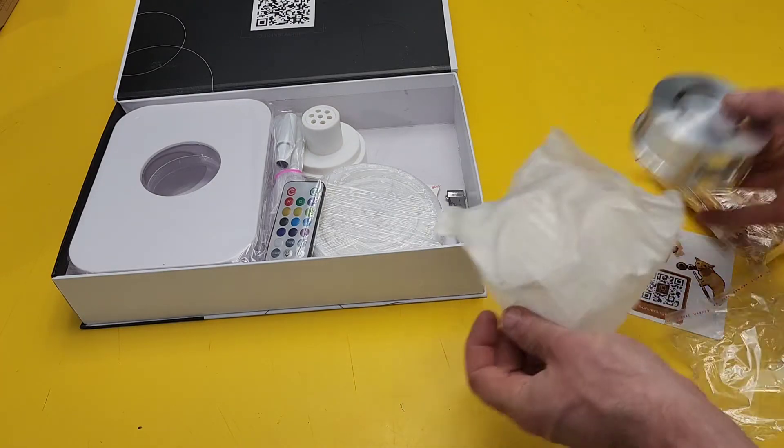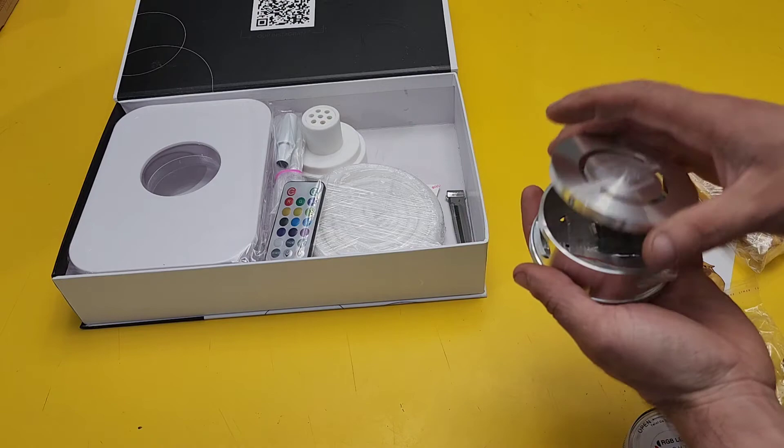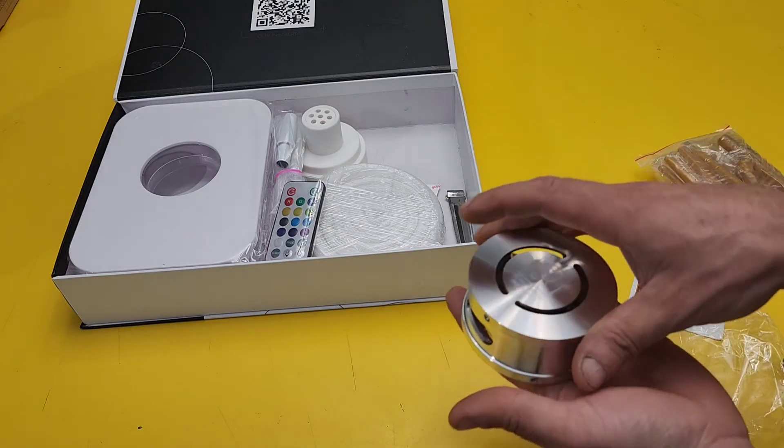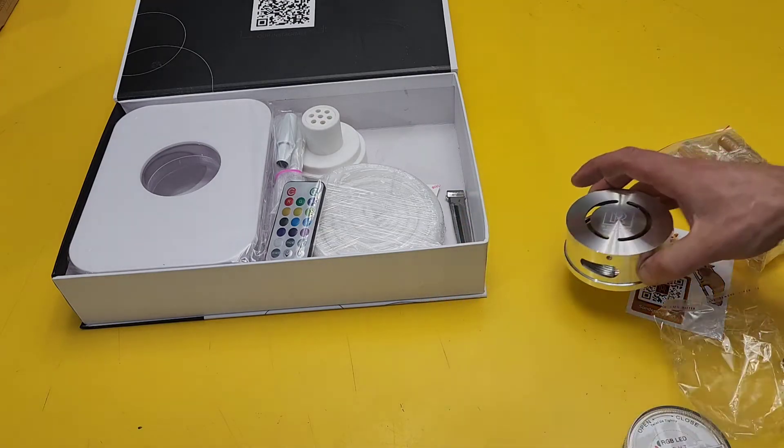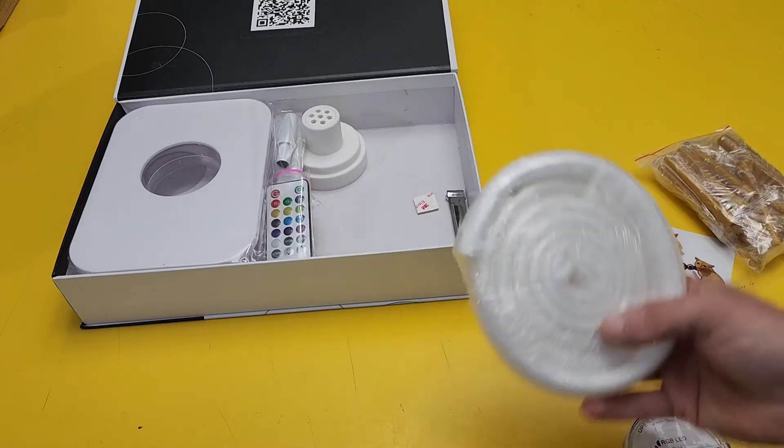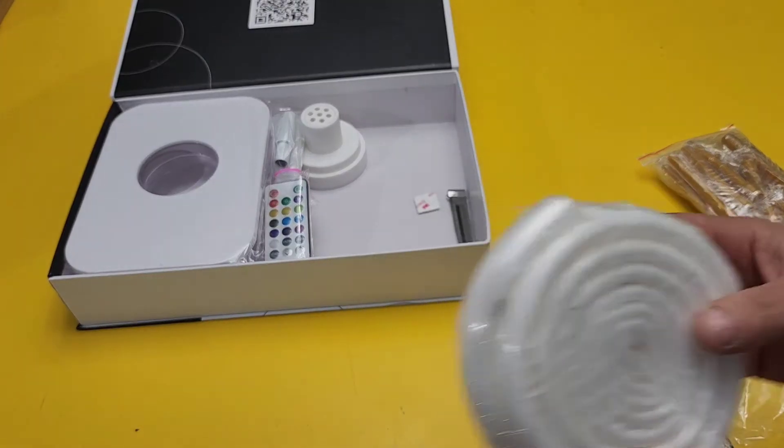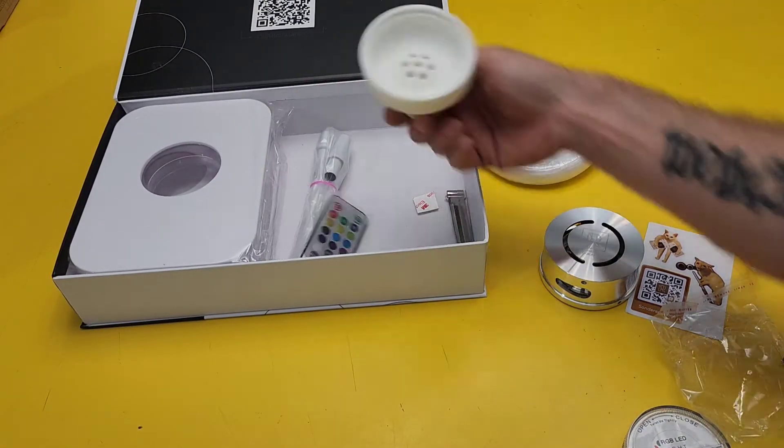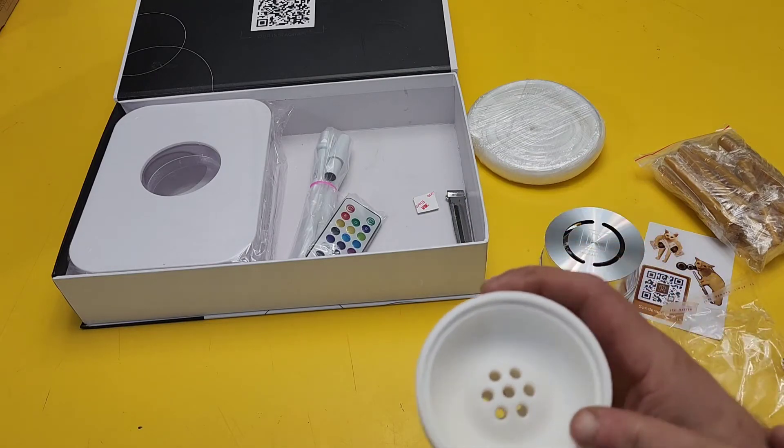You got some napkins. Looks like you've got this RGB light that goes in there. There's also, similar to another video that I've done, this part right here which is kind of like the actual hookah part of it. Then you've got the hookah tube.